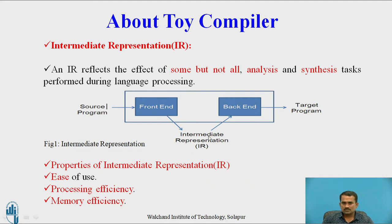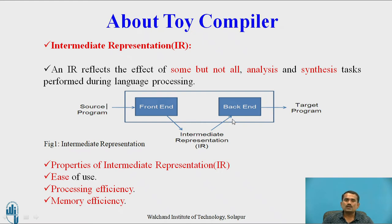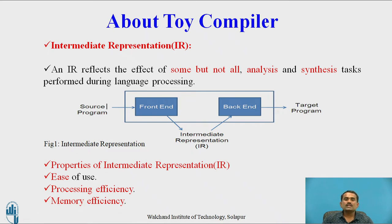What exactly is the front end and back end? The arrow mark shows we give the source program to the front end. The front end performs analysis and produces the IR — represented by a single arrow — which is given as input to the back end. The properties of IR are: first, easy to use; then processing efficiency and memory efficiency. These properties are important in the intermediate representation.